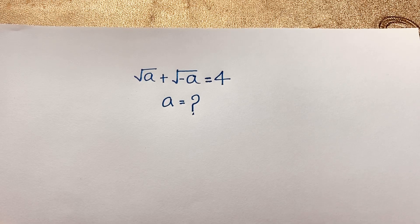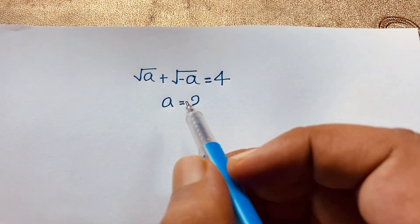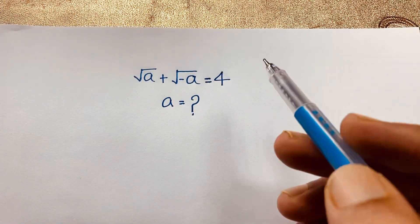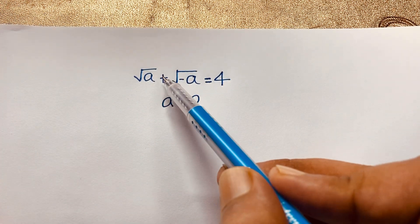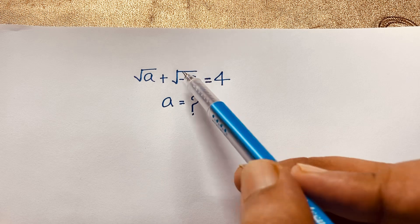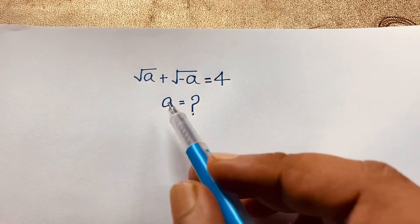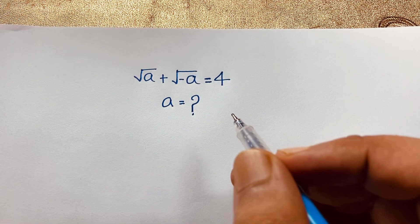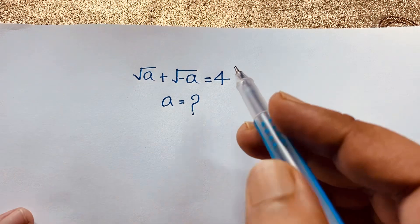Hello everyone, welcome to Rasha's Classroom. Today we have solved an interesting viral maths Olympiad question. This question is: square root of A plus square root of negative A is equal to 4. A is equal to what? How do we solve this interesting maths problem?